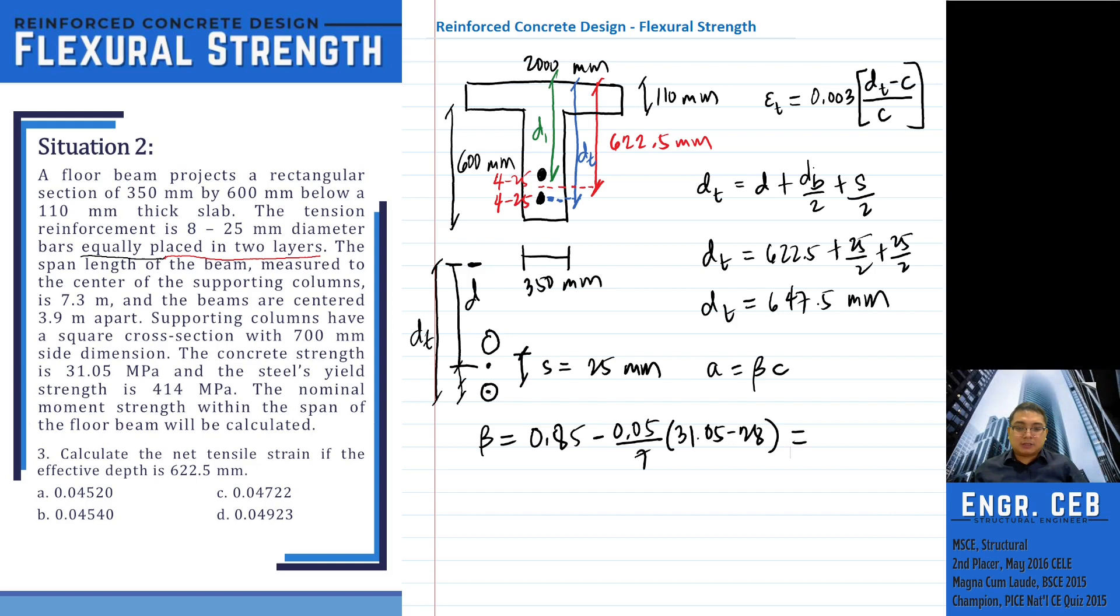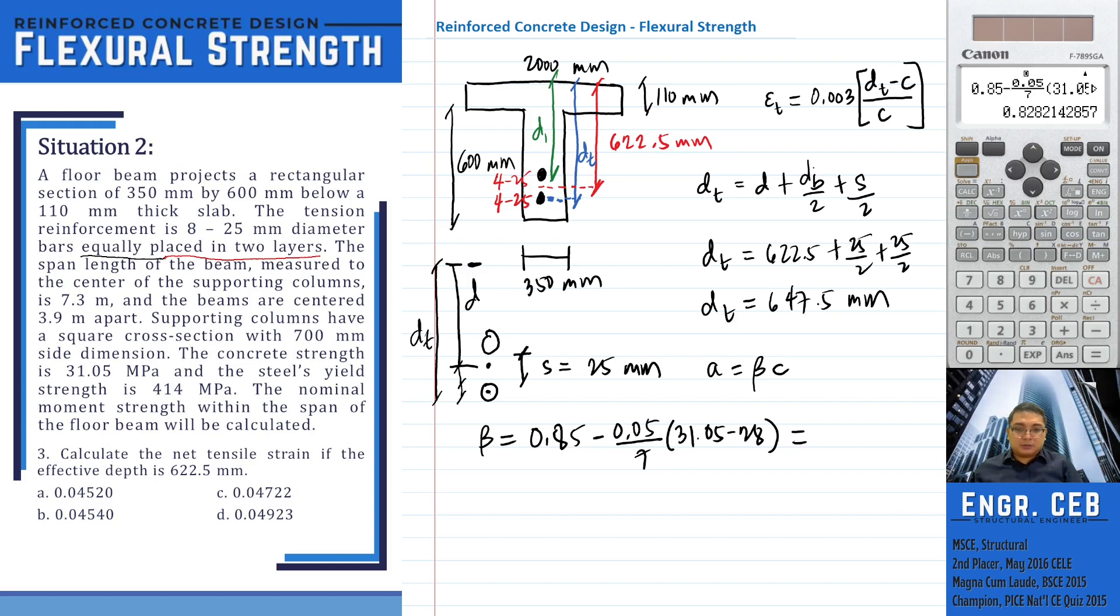Therefore, beta equals 0.8282142857. So this is now beta. So we can now compute for the value of C, 37.18835633.